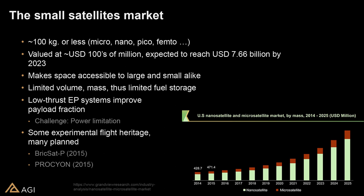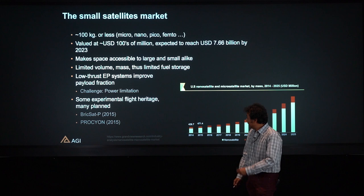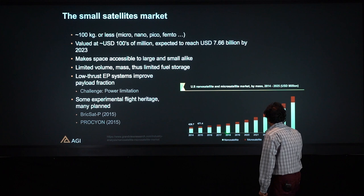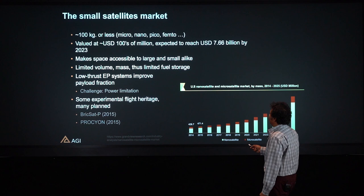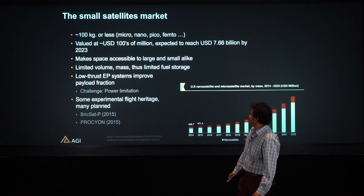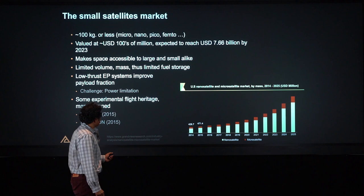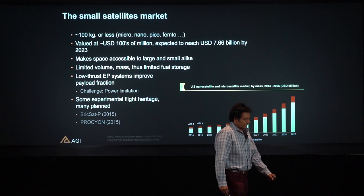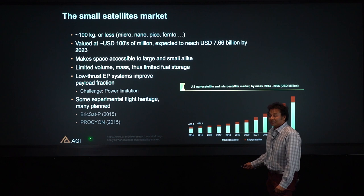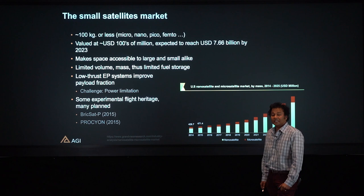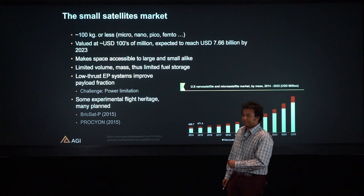Another application area of Low-Thrust propulsion systems is the small satellites market. Small satellites by definition are small, so if we want to pack more effective payload and not too much fuel, Low-Thrust propulsion systems come to mind. The small satellite market is expected to grow almost exponentially in the coming years — currently valued at hundreds of millions of US dollars, and expected to reach billions of dollars by 2023. However, Low-Thrust systems require a separate power unit that needs to be fitted into small satellites, which is a challenge being worked out. Some experimental missions have already flown, such as BrickSat-P in 2015 and the Procheon mission in 2015.